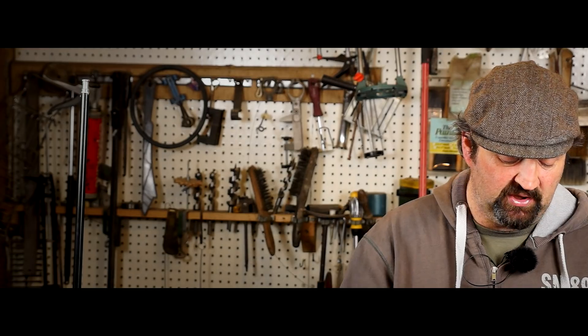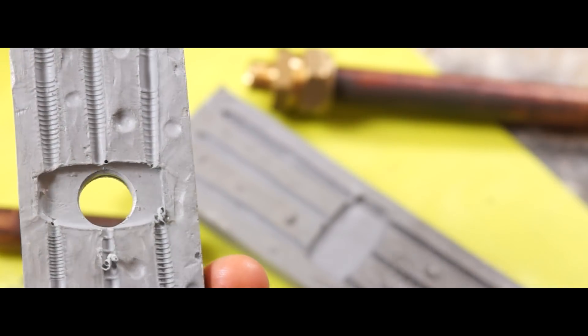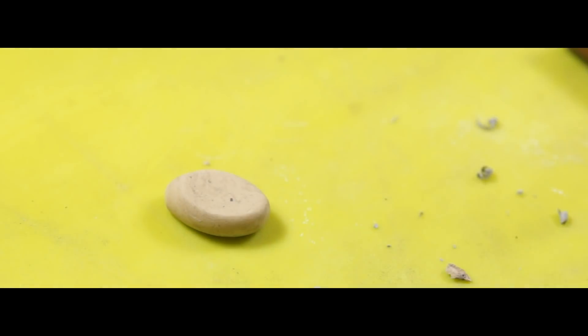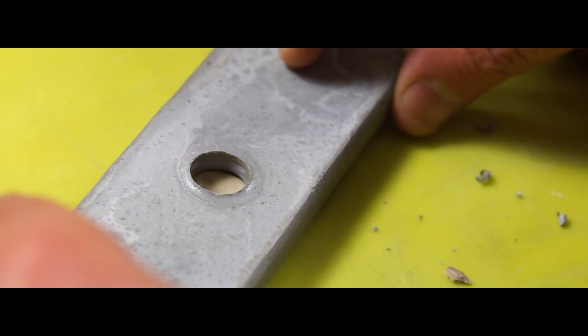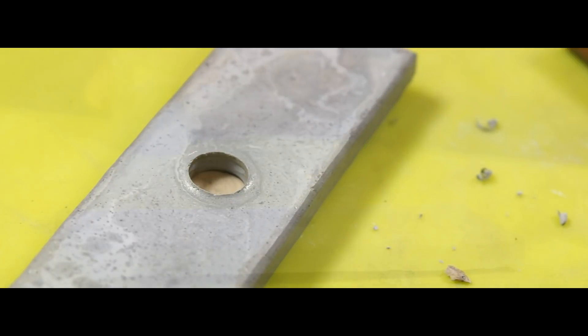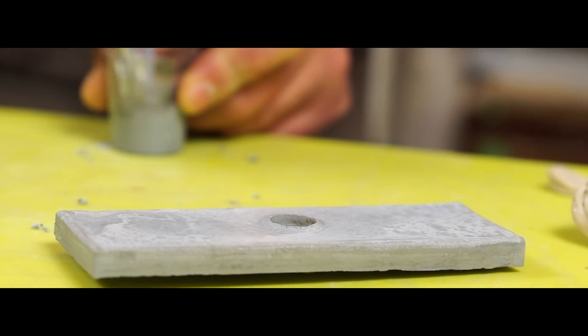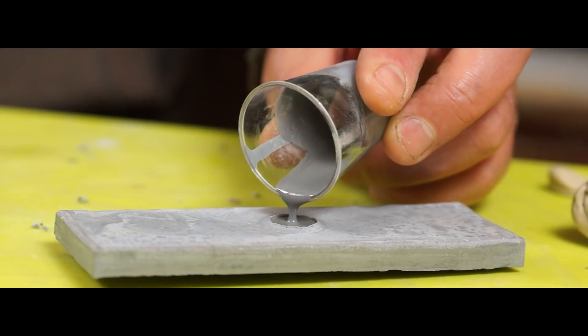Instead, I'm going to fill that up with some more resin and add an injection point at the top. To prevent the resin plug coming out, I made a chamfer on the inside of the hole and then lightly pressed it into some flattened modelling clay for a seal. And it was just a case of mixing up some more aluminium and resin and then filling it up.